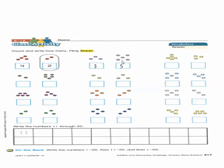Count how many circles do we have: one, two, three, four, five. Write five. How many circles in the other group? One, two, three. Write three. Which group has fewer? This one — circle it.